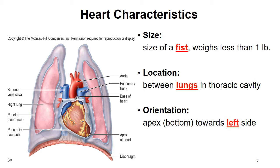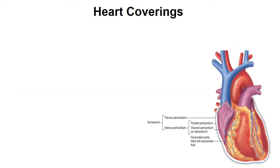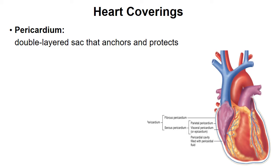This also influences the size of the lungs. The right lung has three lobes and is bigger, while the left lung is actually smaller because the heart takes up part of that space. Now, before we get into the inside of the heart, let's look at the heart coverings. The heart on the outside has something called the pericardium. Peri means around and cardio means heart. This is a double-layered sac that anchors and protects the heart. The pericardium is divided into two regions: parietal pericardium and visceral pericardium.